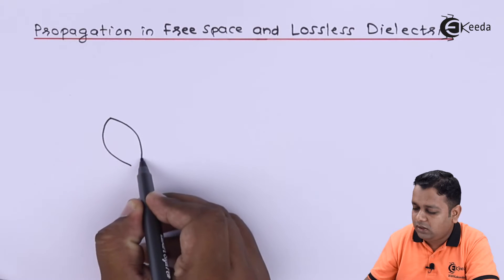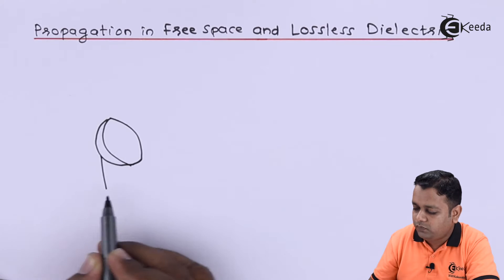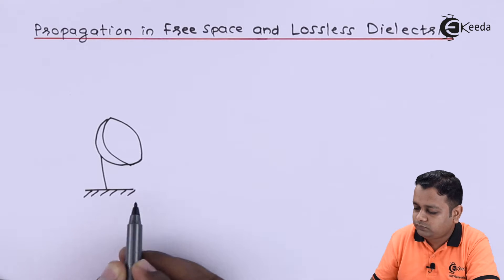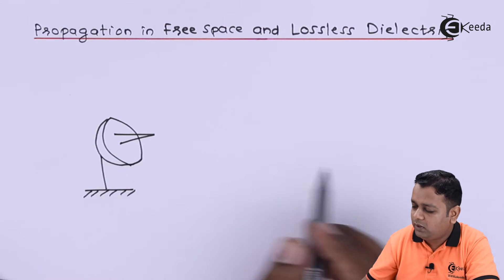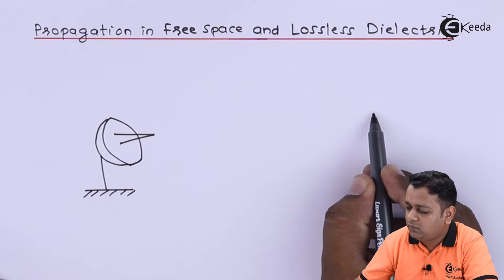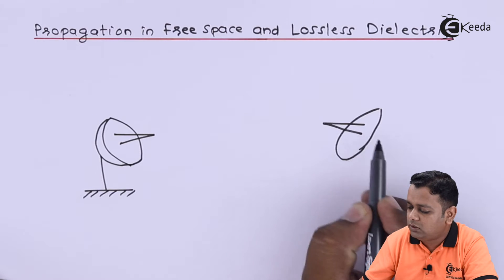I'll take the help of a drawing of a very directional antenna here. So this is the transmitting antenna, and here we take another antenna to receive the signal.